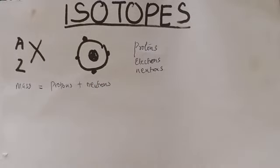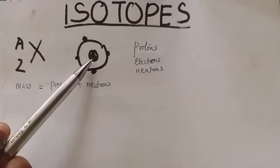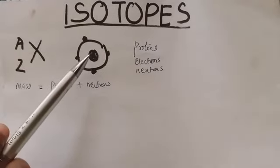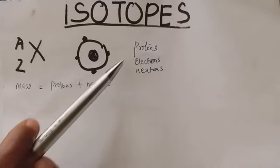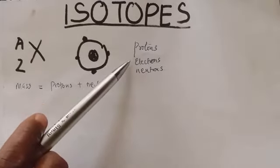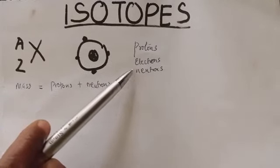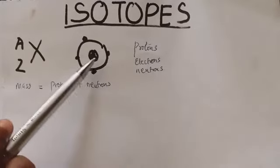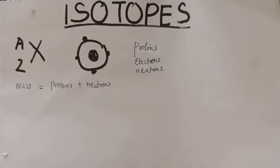Now remember, in the postulation of the structure of the atom, they say the atom consists of a dense nucleus with electrons revolving around in circular orbits. We are going to look at the nature of the masses of each of these subparticles. The proton has one unit, the mass of the electron is negligible, while the neutron has one unit. So the mass of an atom is determined by the sum of the proton and neutron masses — this forms the atomic mass.